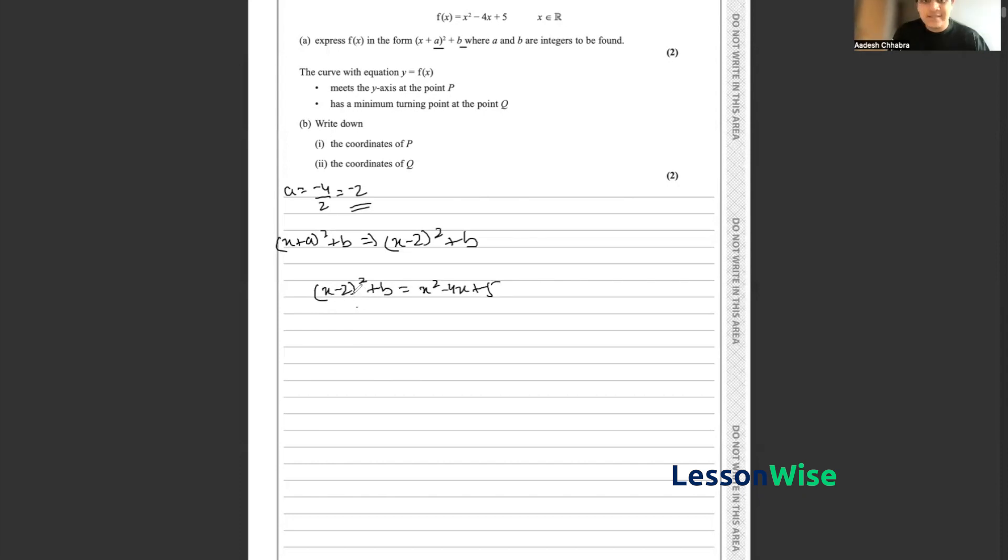And if we were to expand this and then simplify, we would get x² + 4 - 4x + b = x² - 4x + 5.